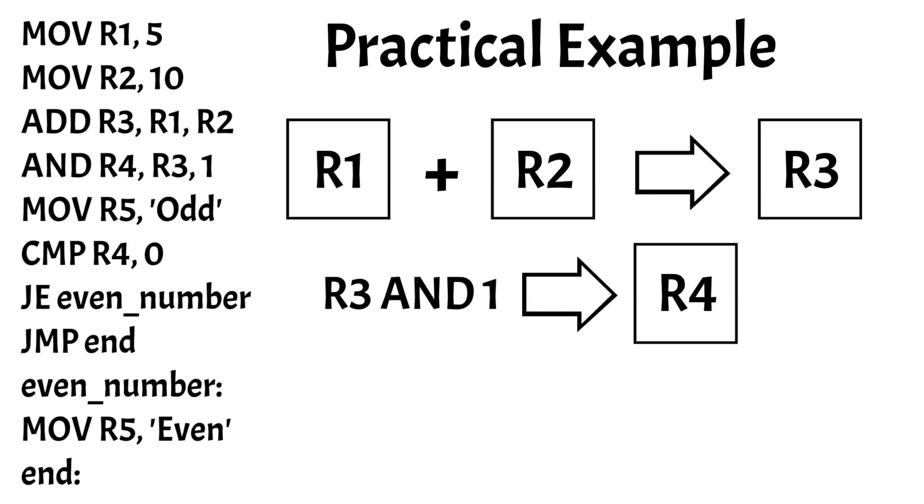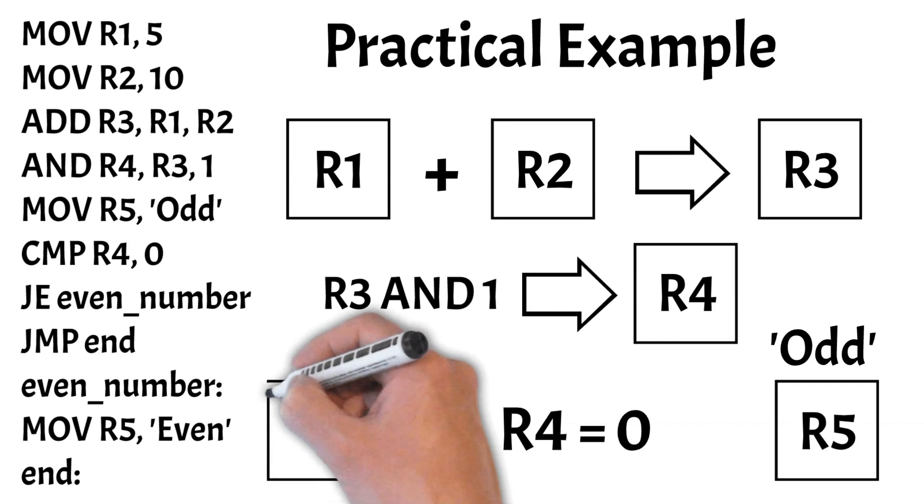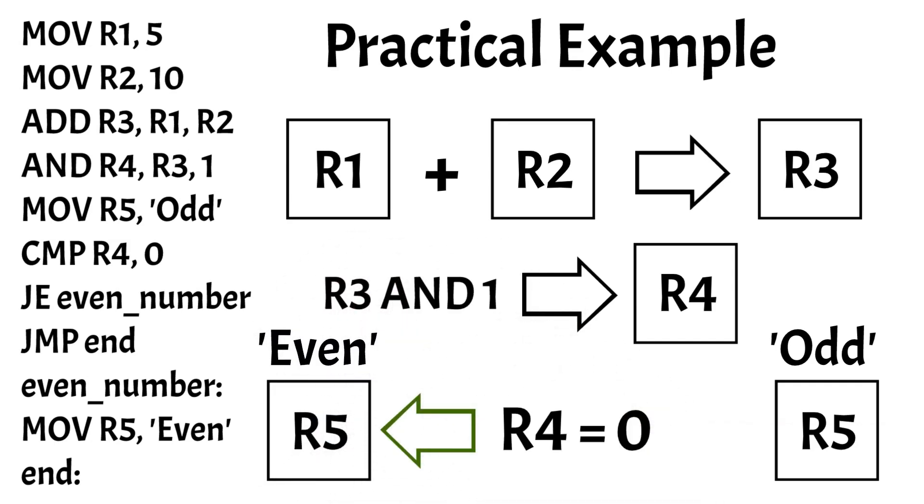The AND operation effectively checks the least significant bit of the sum. If it's 0, the number is even. If it's 1, the number is odd. Initially, we assume the result is odd by loading this string into register R5. We then compare R4 to 0. If they are equal, it indicates that the sum is even and the program jumps to the even number label to update R5 with the string even. If the sum is odd, the program skips this step and jumps directly to the end label. This example effectively demonstrates basic arithmetic operations and conditional checks in assembly language.